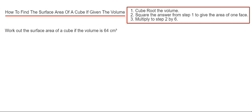Today I'm going to show you how to work out the surface area of a cube if you are given the volume of the cube. You can do this by following the three steps in the red box. Step one is to cube root the volume. This will give you the side length of the cube.